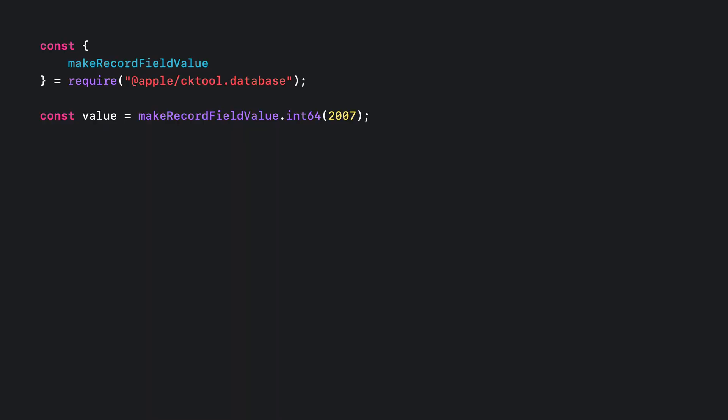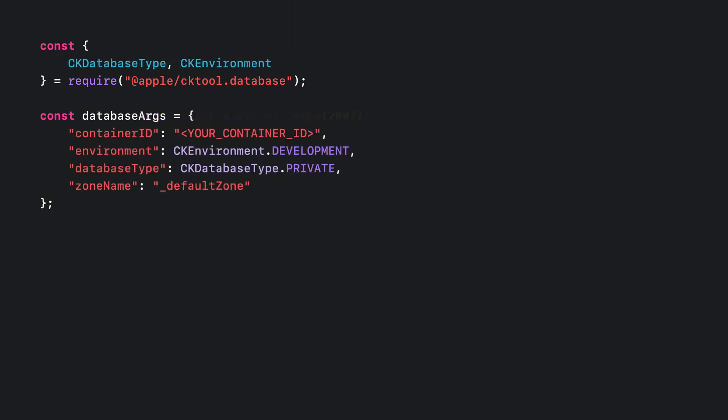Field values in cktool.js records are created using field value factory functions. For a coin issued in 2007, I'd pass that value to the makeRecordFieldValue.int64 factory function in order to create a record field value that contains an int64. In general, if a factory function can't create a record field value from the value passed in, it'll throw an exception. Here, I've created an object to hold common values that I send to methods that work with records. Since container ID, environment, database type, and zone name are often required, I'm including those in this databaseArgs object.